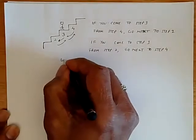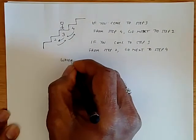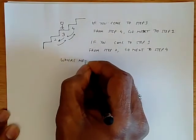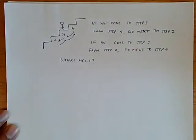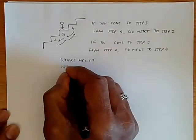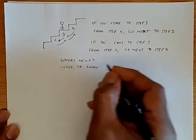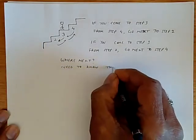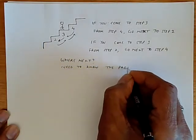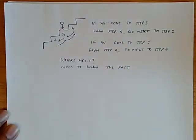Where will they go next? And the answer is, we really don't know. To determine where they go next, we need to know the past. We need to know which step they came from. And when this happens, the system becomes quite complicated to analyze.